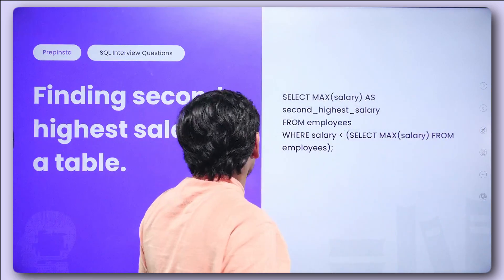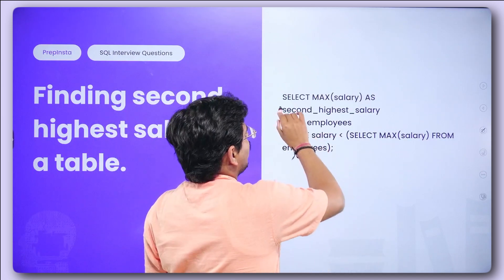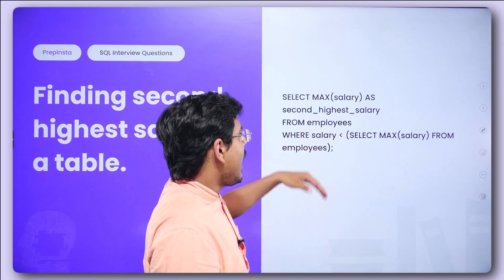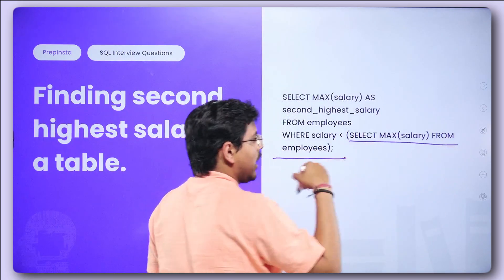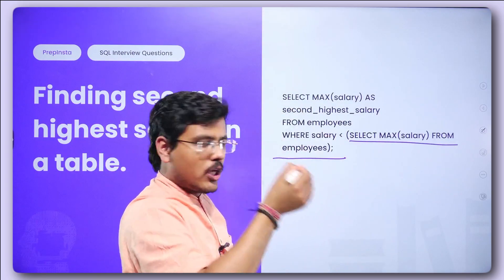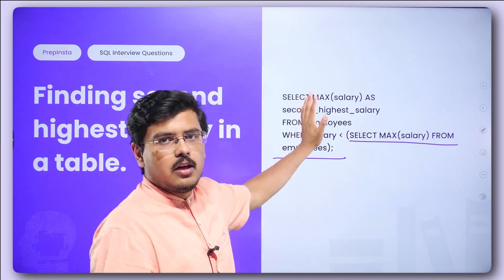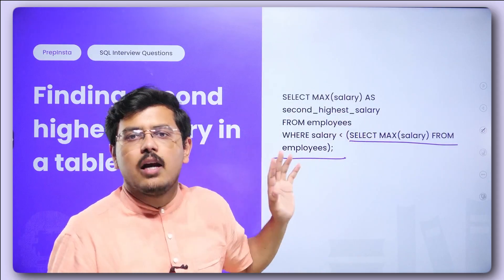Finding the second highest salary in a table — most often an employee table — is one of the most asked SQL queries. You write a select query: select max(salary) as second_highest_salary from employees where salary is less than the inner query that returns the highest salary. Any value just below the highest would be returned as the second highest salary. This is a very easy query for anyone who knows SQL basics.